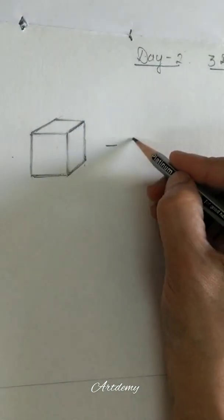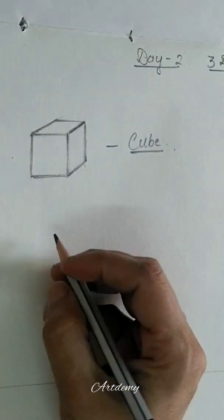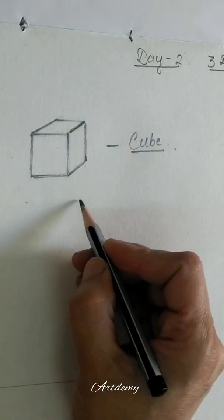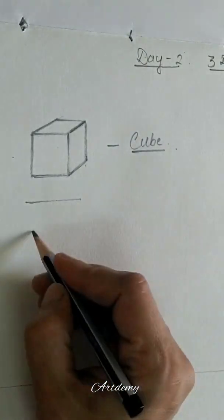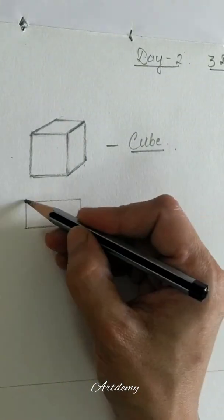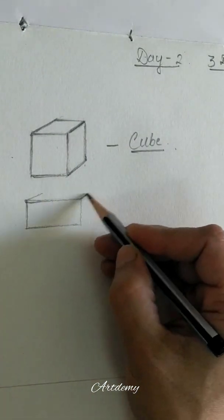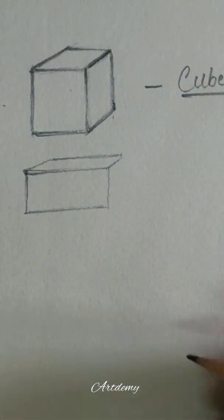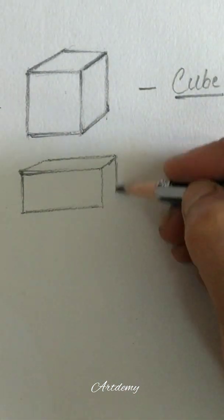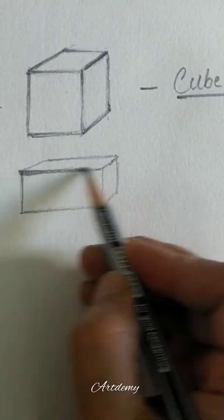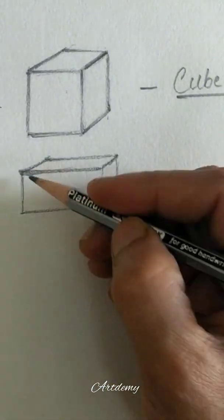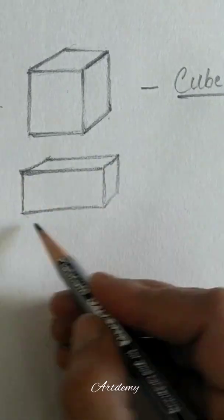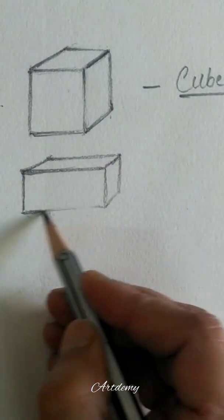Now we'll be drawing a cuboid, which is the 3D shape of a rectangle. So again, a rectangle on top and on the side in the same way we did in the cube. So this has become the perfect cuboid.